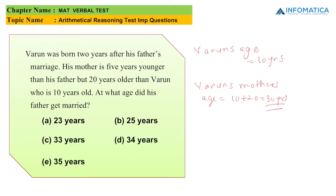His mother is 5 years younger than his father, so Varun's father is 30 + 5 = 35 years old. Going back 10 years gives the father's age when Varun was born: 35 − 10 = 25 years. Since Varun was born 2 years after his father's marriage, we subtract 2 more: 25 − 2 = 23. So Varun's father got married at age 23.